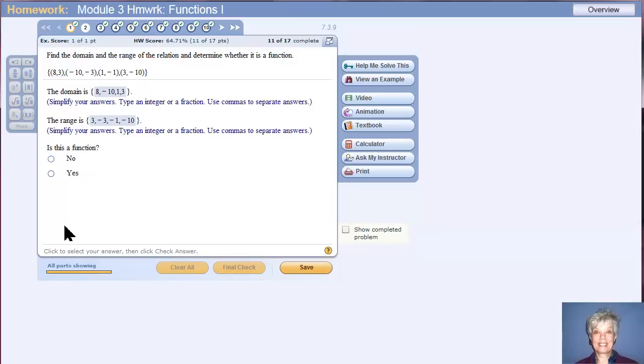Now we're being asked if this is a function. This is a function if each individual x coordinate, if each x coordinate is not paired up with more than one y coordinate. So here 8 is paired up with 3 and 8 doesn't happen again, so 8 is only paired up with 3. The same for negative 10. Negative 10 occurs as an x coordinate only once and it's not paired up with any number except negative 3. 1 is only paired up with negative 1 and 3 is only paired up with negative 10. So we do have a function. Yes, this is a function and I'm right.